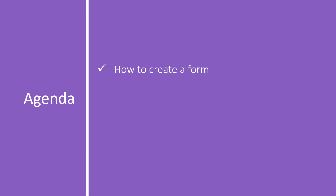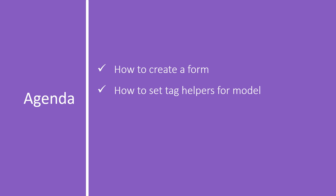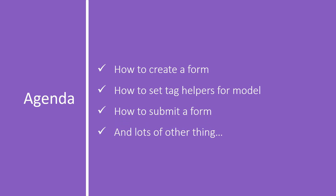We will learn how we can create a new form and how we can set tag helpers for the models. Basically, a form is the combination of multiple input elements and we will create those elements with the help of tag helpers. We will also bind a model to the form so that we can get all the data in the model. We will learn how to submit this form and several other things required to work with forms.